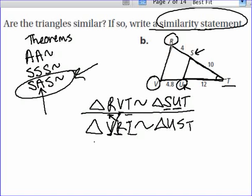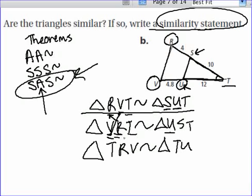Another way, again, I could do T, R, V, similar to triangle T. And then let's see, V corresponds with U, so U, and then R. Oops, no, no, no. I need to do R, which corresponds with S, so that's going to be triangle T, S, U.